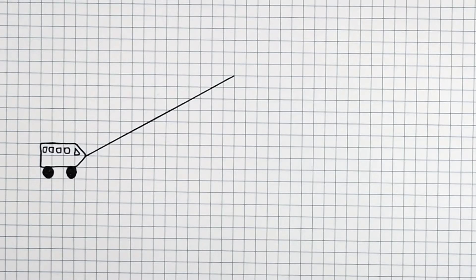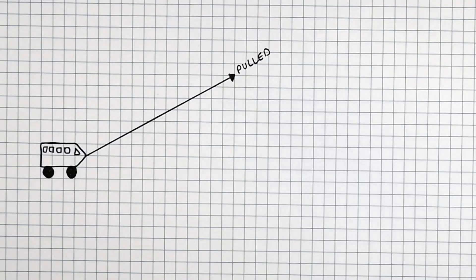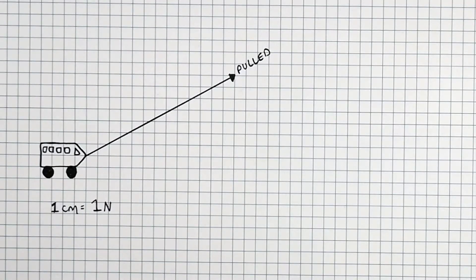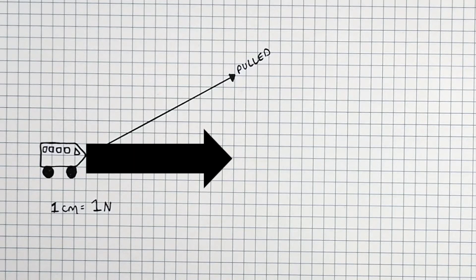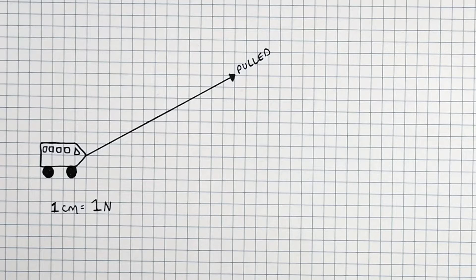Not all forces act vertically or horizontally. As you can see here, this force that is pulling the car along is acting diagonally. You can split this diagonal component into two other components, the vertical and the horizontal force. Acting together, the vertical and the horizontal component will have the same effect as the single diagonal force.